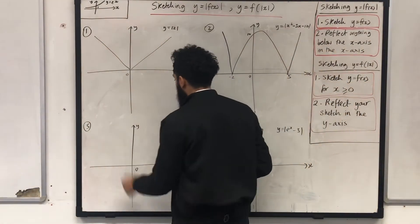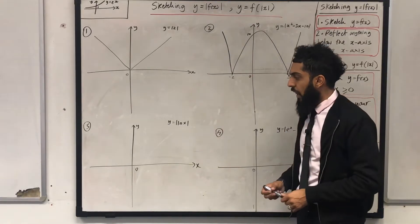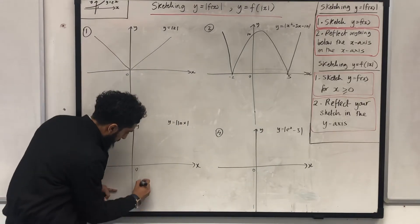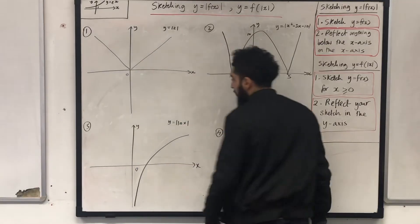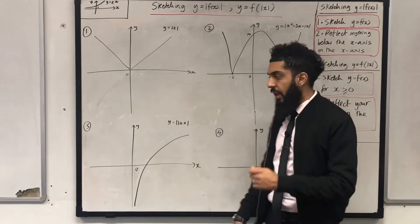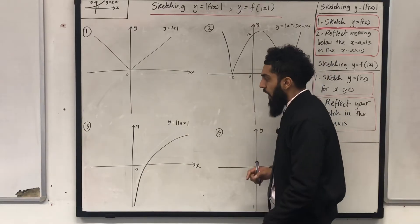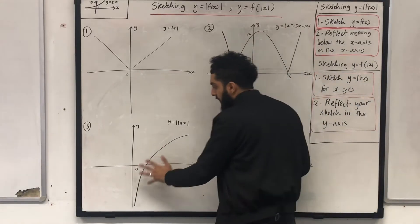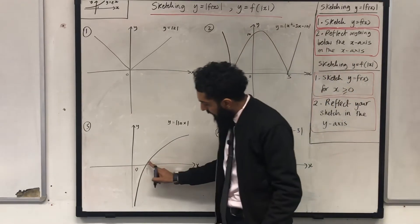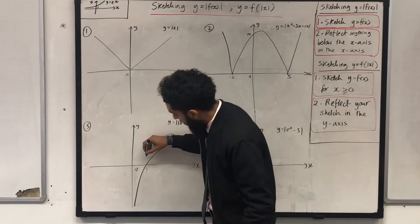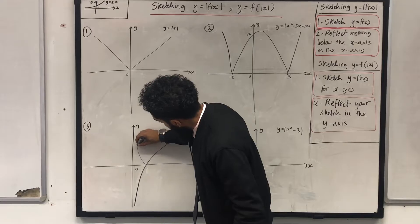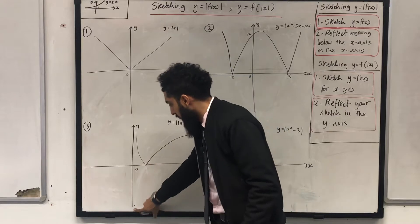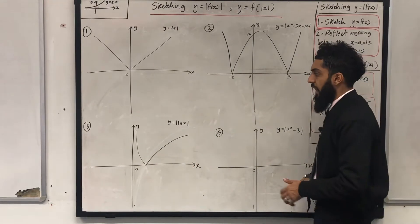Question three: I want to sketch y equal to the modulus of ln x. The asymptote is the y-axis, or x equals 0. The x-intercept of y equal ln x is 1. The next step is to reflect anything below the x-axis in the x-axis. Reflecting that part in the x-axis gives the upper reflection, and I can rub out the part below. That is my graph of y equal to the modulus of ln x.